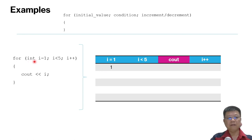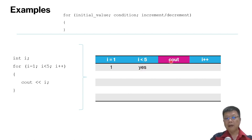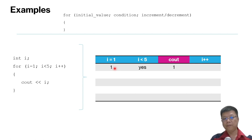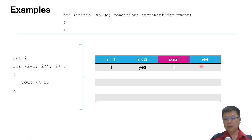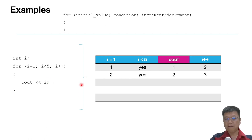We start with i equal to 1. The condition is i smaller than 5 — we check whether 1 is smaller than 5. Yes. Then we check the cout: i value is 1. After this line it loops, so i increases by 1, becoming 2. We check again whether 2 is smaller than 5 — yes — and cout the value, which is 2. Then i++ becomes 3, and the process repeats for i equal to 3.